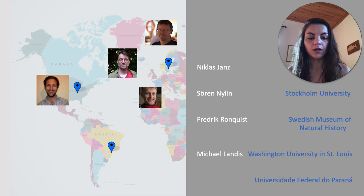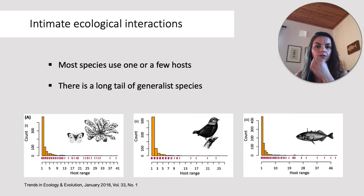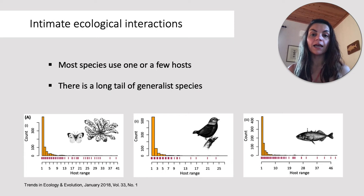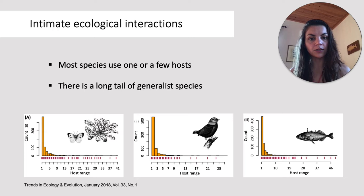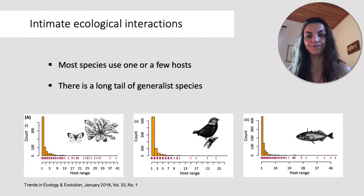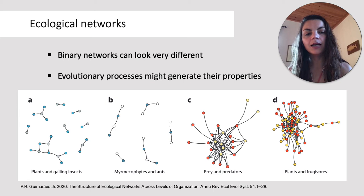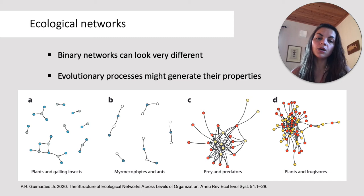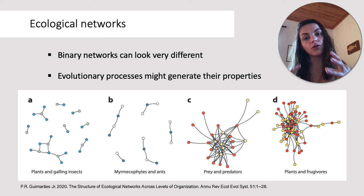Before I moved to Sweden, I did my bachelor's and my master's at Universidade Federal do Paraná in Curitiba, Brazil. Species with intimate ecological interactions such as parasites and mutualists make up a large part of known biodiversity. At least among parasites, there is a general pattern about the number of hosts used per species. As we can see in these three histograms of host range — the number of hosts used — most species use one or a few hosts, but there's a long tail of generalists in all of these very different systems.